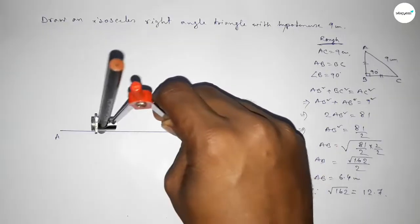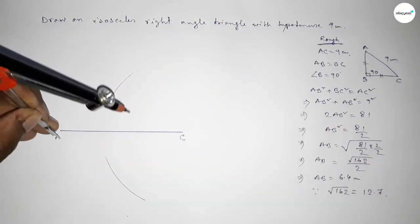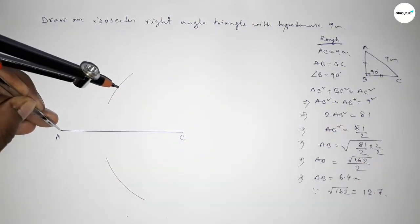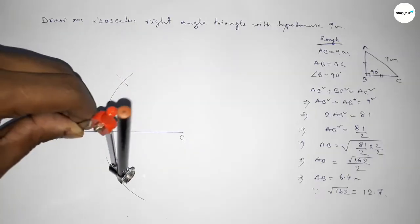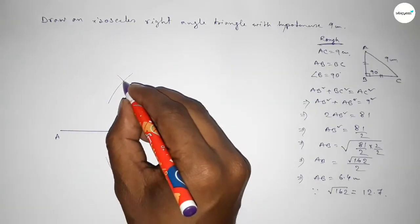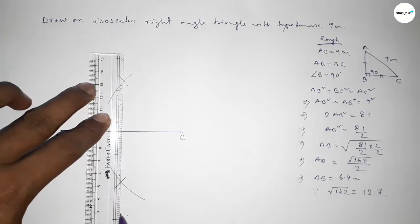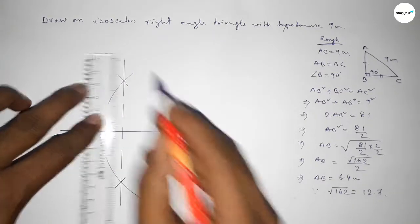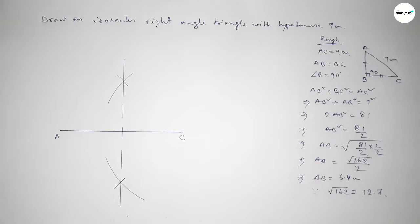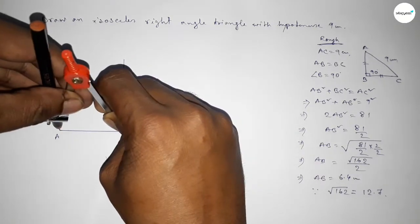Putting the compass at A and taking greater than half of AC, drawing arcs. Then putting the compass at C with the same length and cutting arcs above and below. Both curves intersect at two points. Now joining these two points to get the perpendicular bisector of AC.